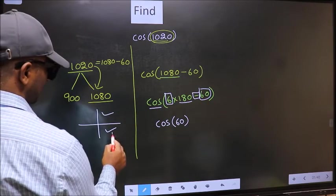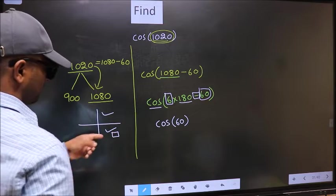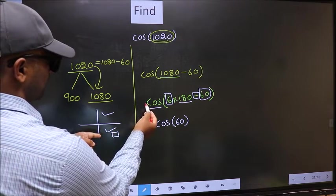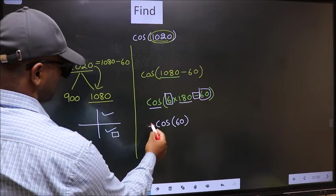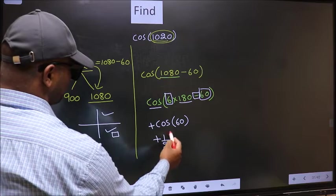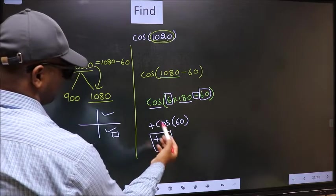That means the angle lies in the fourth quadrant. And in the fourth quadrant, cos is positive. So we should put plus. So plus cos(60) is 1/2. This is our answer.